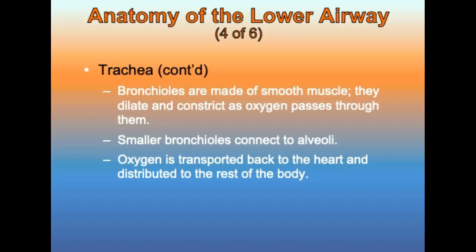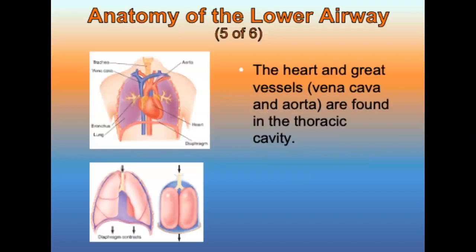Oxygen diffuses across the alveolar membrane into the pulmonary capillaries and is transported to the rest of the body. Carbon dioxide, the waste product, diffuses from the pulmonary capillaries into the alveoli where it is exhaled and removed from the body. The heart and great vessels — the vena cava and the aorta — are also present in the thoracic cavity and are important for respiration.